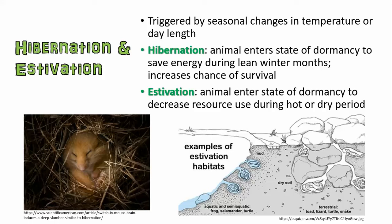A seasonal type of change found in animals is either hibernation or estivation. Hibernation is when an organism basically enters a state beyond sleep where it's dormant and saving as much energy as possible. This happens usually during lean winter months when it's cold and there are very few resources, to increase the chance of survival. A very common example is a bear. Estivation is the opposite — animals enter a state of dormancy not when it's cold, but when it's really hot or dry. Organisms living in very hot and dry environments may go into estivation during the summer or dry season to reduce the resources they need and therefore increase their chance of survival.